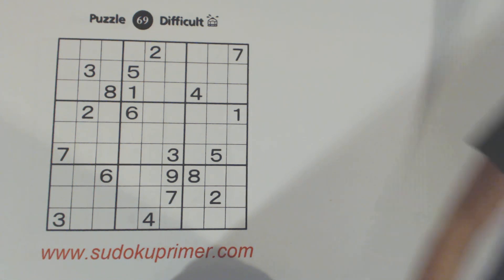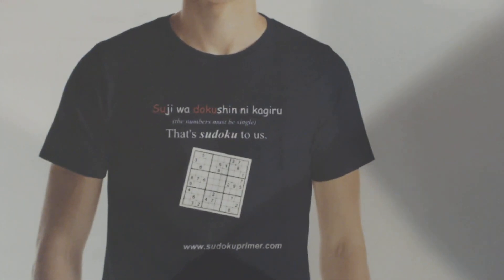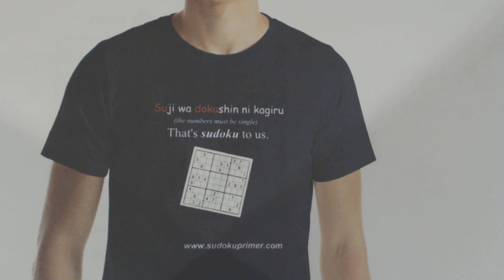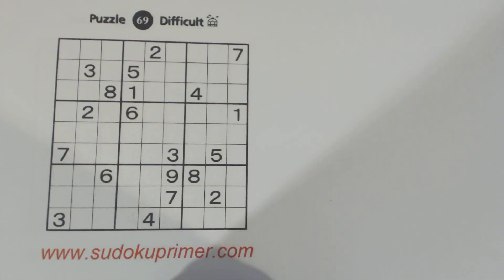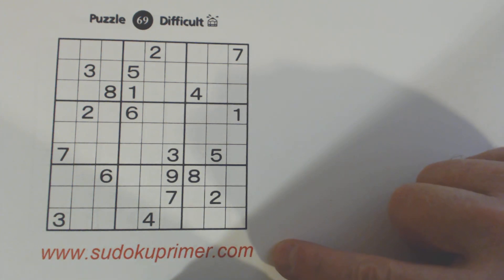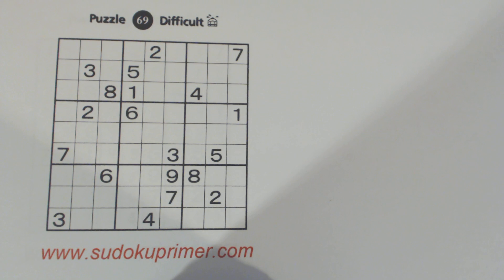Before I get started, I want to show you a t-shirt that's available on the Sudoku Primer website. This t-shirt shows the full Japanese name of Sudoku, and that full Japanese name describes the puzzle, how Sudoku works, because the full Japanese name means the numbers must be single, which explains that every row, every column, and every box can only have one of each number in it. To see that t-shirt and several other t-shirt designs, go to SudokuPrimer.com and go to the online store. You'll see lots of t-shirt designs out there, and there are new ones coming.